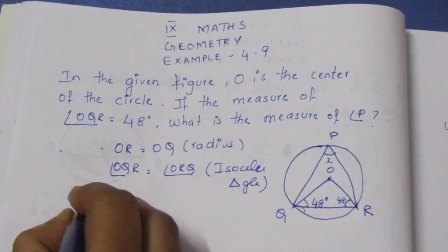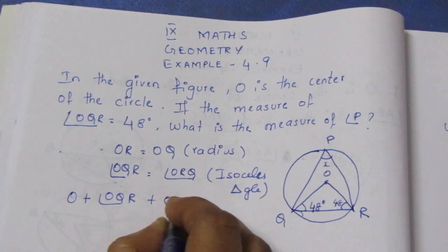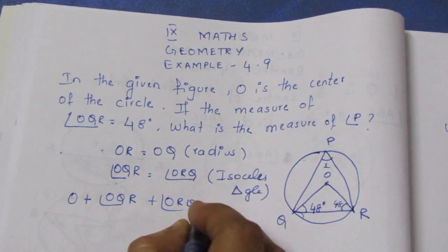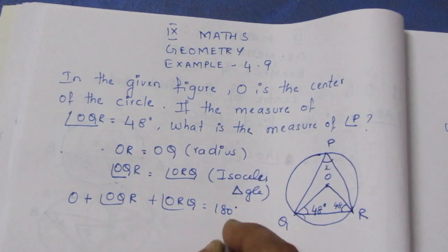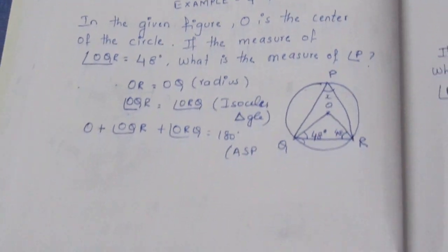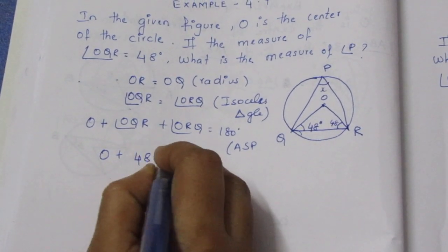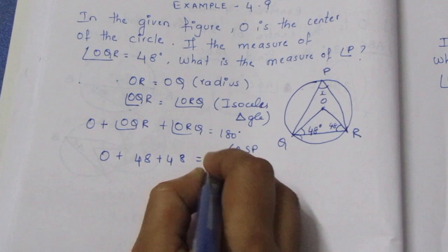Angle QOR plus angle OQR plus angle ORQ equals 180 degrees. In triangle OQR, O plus 48 plus 48 equals 180.